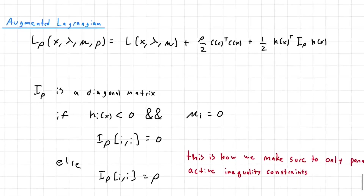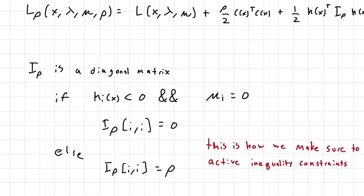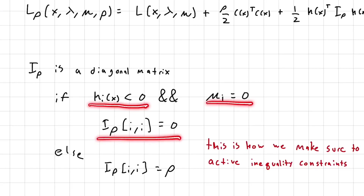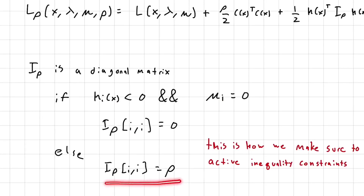The I_rho term is a diagonal matrix that encodes the active set into the augmented Lagrangian. If a constraint is inactive and the dual variable associated with it is zero, we don't penalize it at all — the diagonal entry for that index is zero. If this is not the case, we apply the penalty rho.